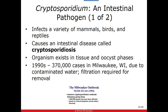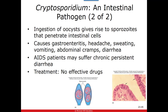Cryptosporidium penetrates intestinal cells, causing gastroenteritis — inflammation of the intestine — leading to diarrhea, vomiting, headaches, and sweating. AIDS patients suffer more chronic persistent diarrhea and cannot get rid of the parasite themselves. Right now we don't have any effective drugs for cryptosporidiosis. Treatment involves replacing fluids and electrolytes, and eventually the parasite should leave with the diarrhea or the immune system should clear it. For those without a functioning immune system, such as AIDS patients, it can be deadly.